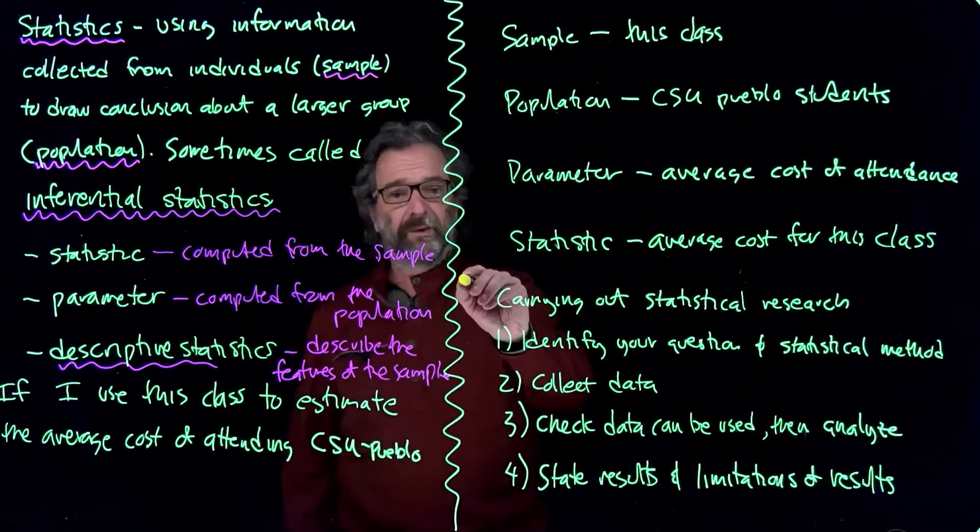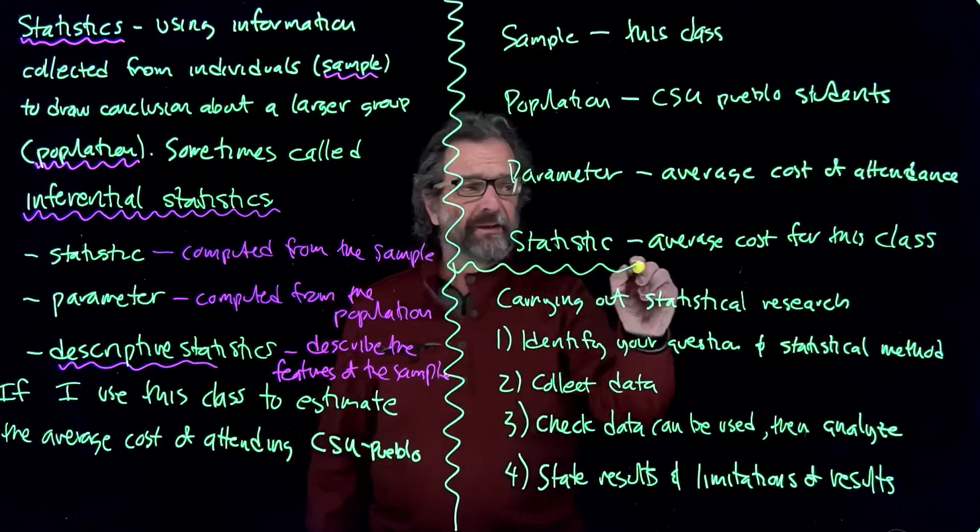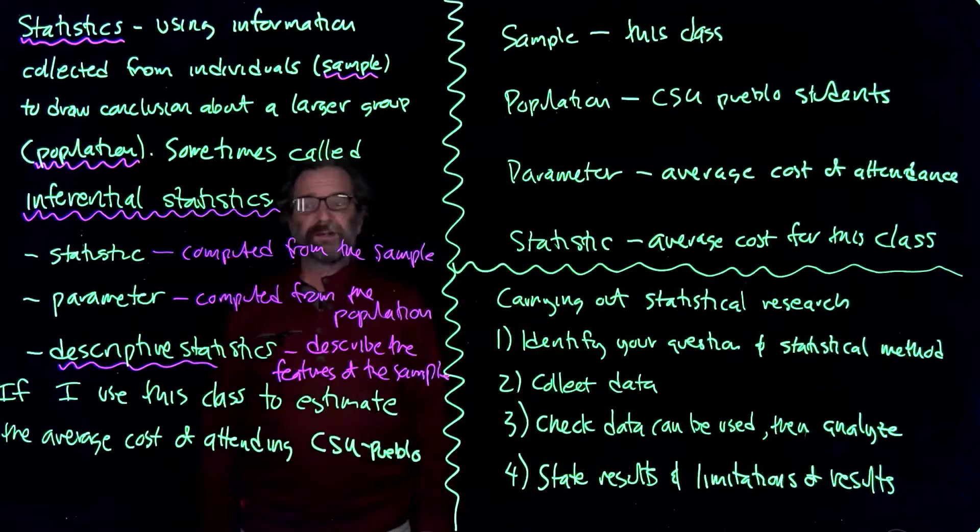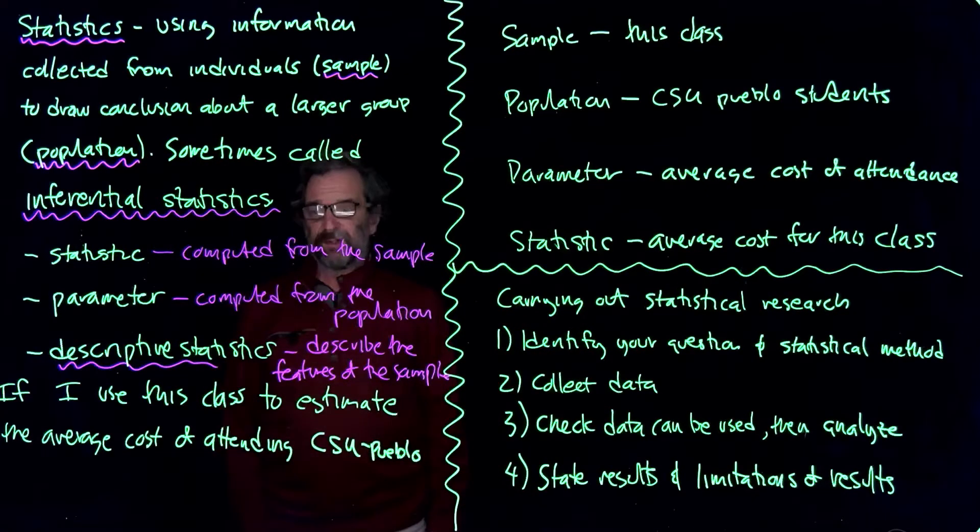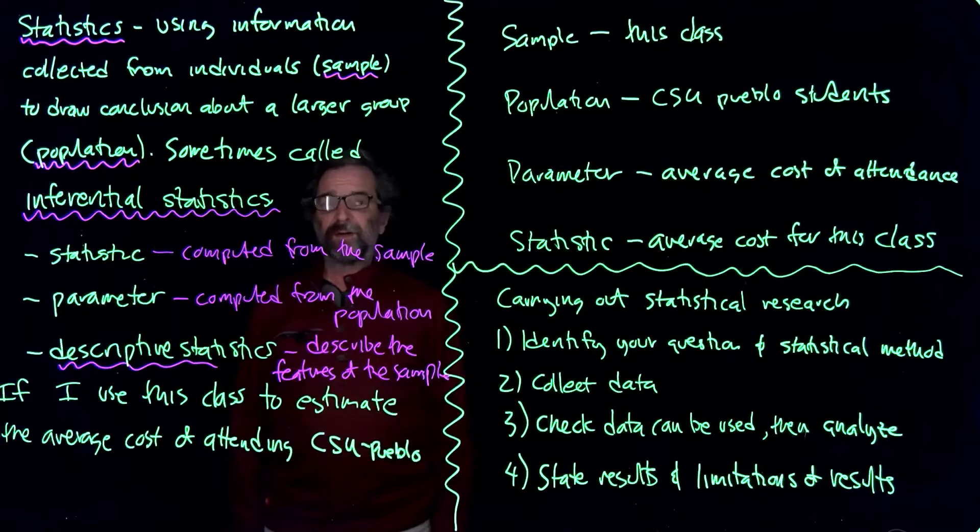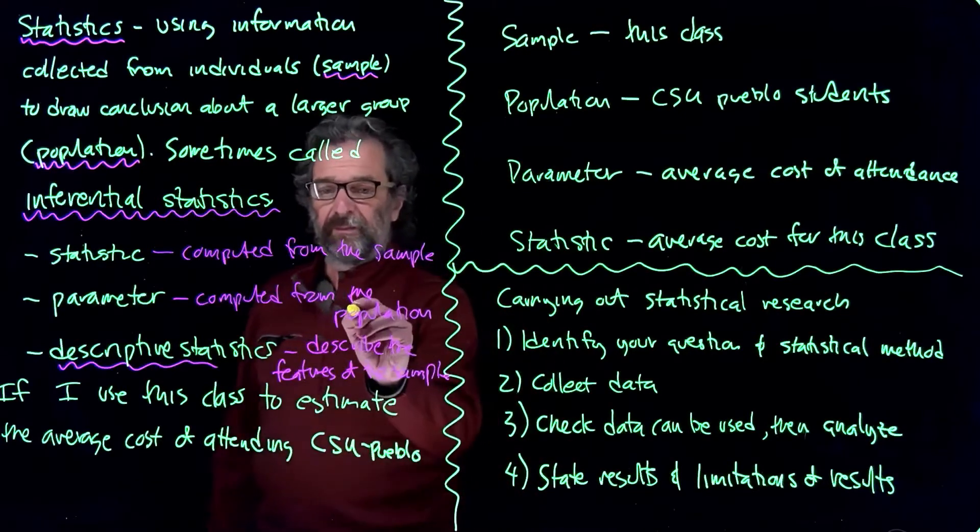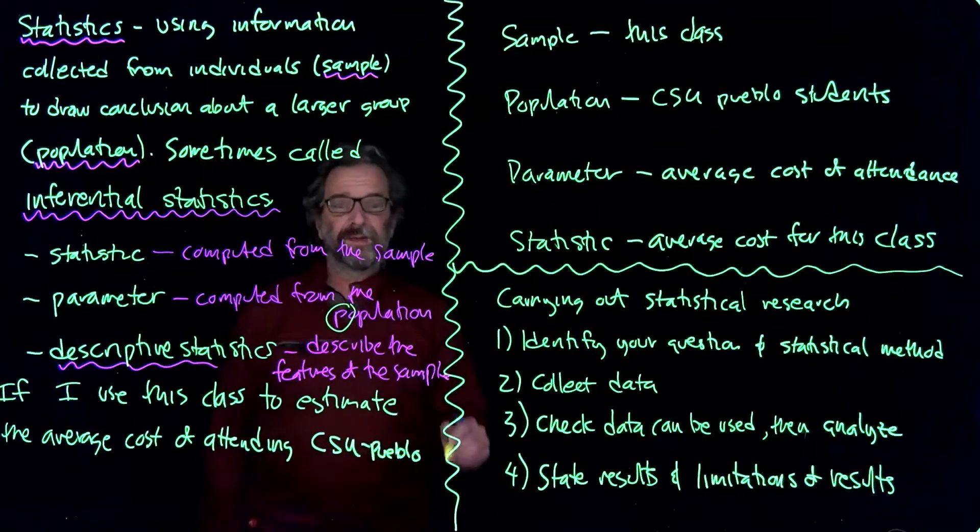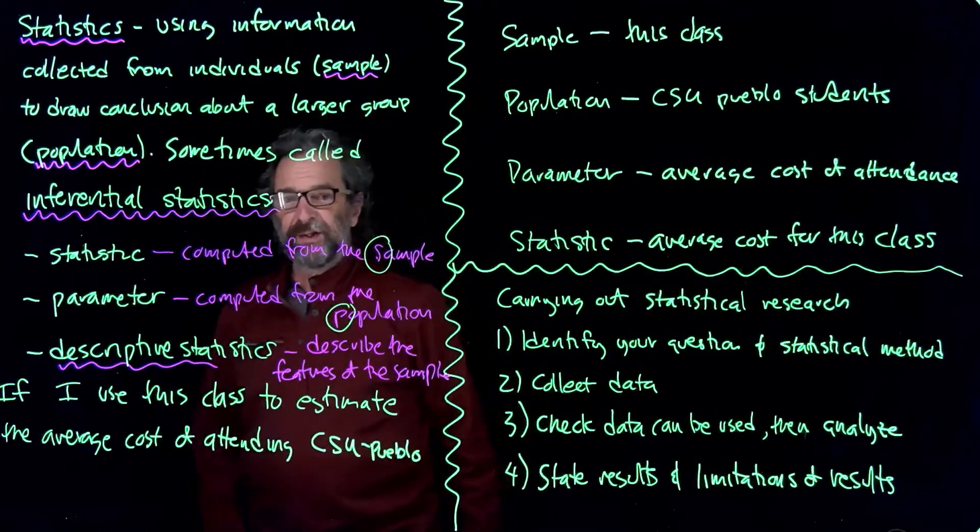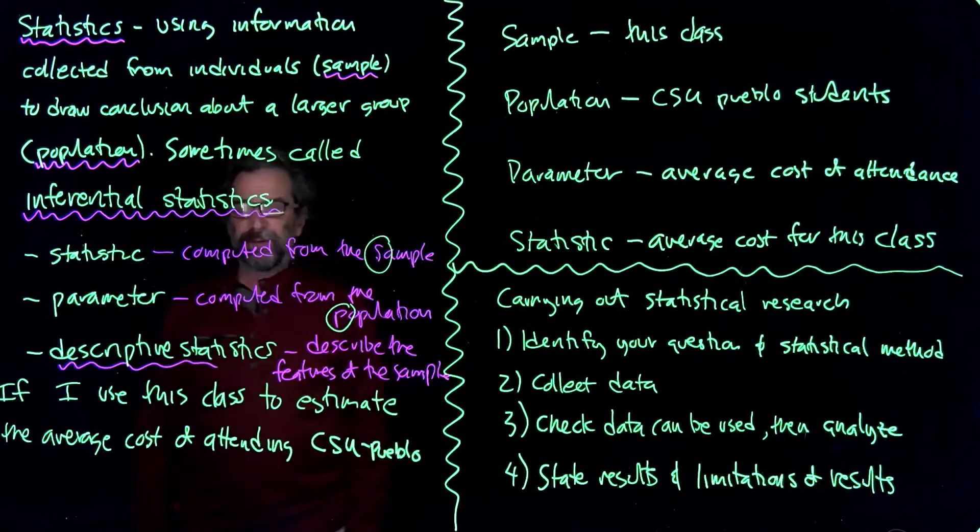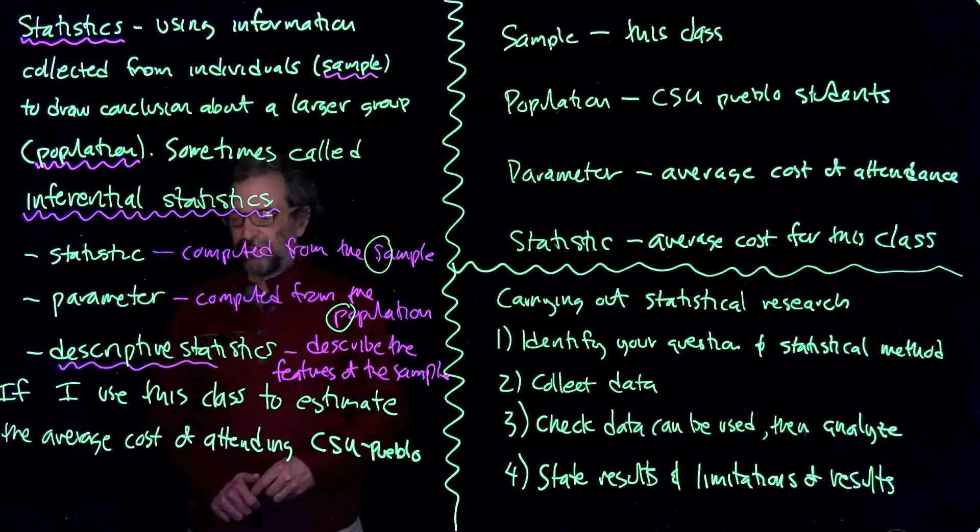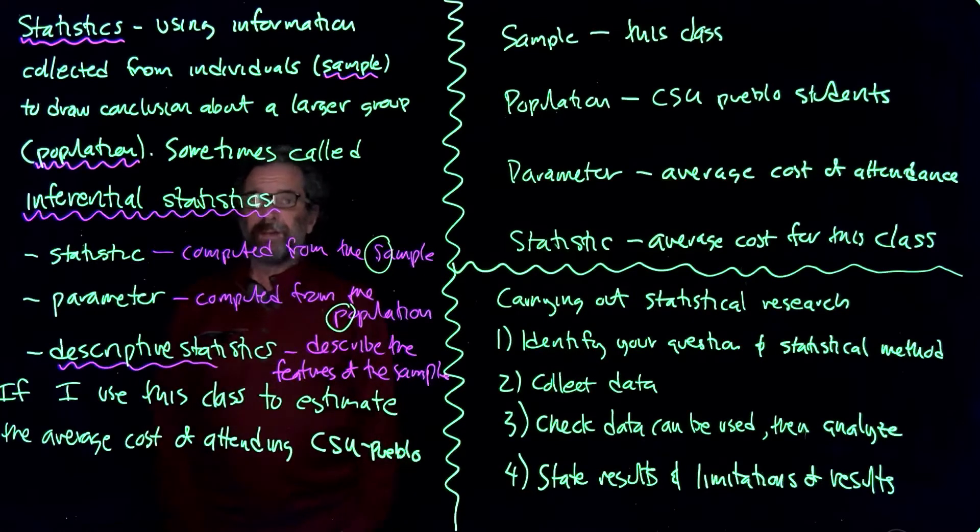So that's the basic definitions for beginning in a stats class: sample, population, parameter, statistic. You might notice parameter starts with the same letter as population, and statistic starts with the same letter as sample. So the statistic is about the sample and the parameter is about the population. The sample is that small group of individuals that you get to measure, and the population is the larger group of individuals that you want to know about.